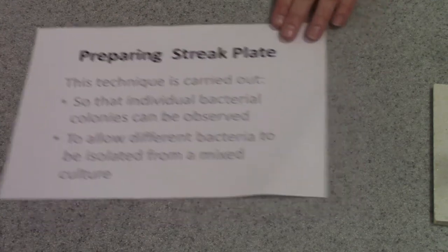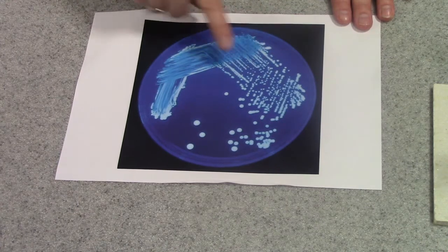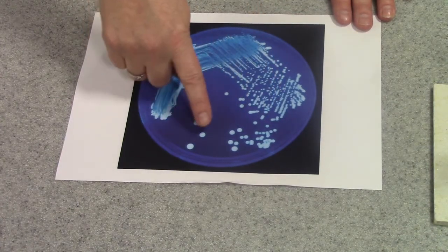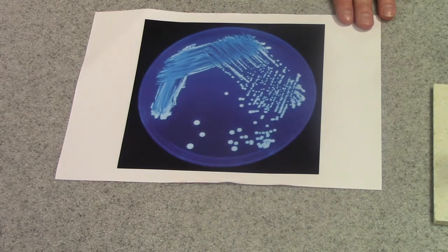The kind of plate we should end up with should be like this, where we have an area of very thick, dense bacteria, and then finally at the end, individual colonies that can be seen, each made of millions of identical bacterial cells.